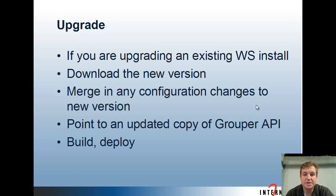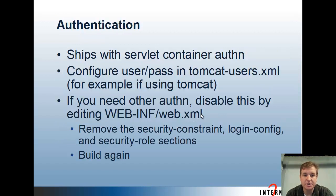If you're upgrading an existing web services install, generally what you do is download the new version, merge any configuration changes you made from the old version to the new version, and point to your updated copy of the Grouper API — whatever you're upgrading to — and then build and deploy that. You should keep track of any configuration changes that you make as you deploy the web services.